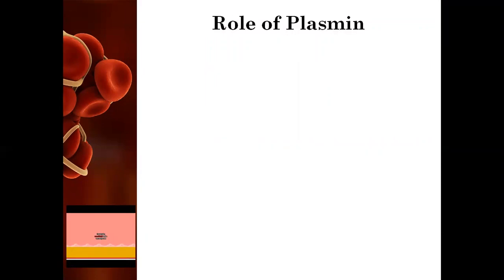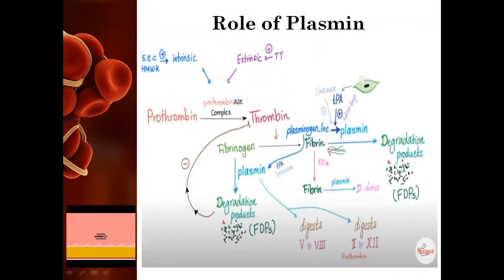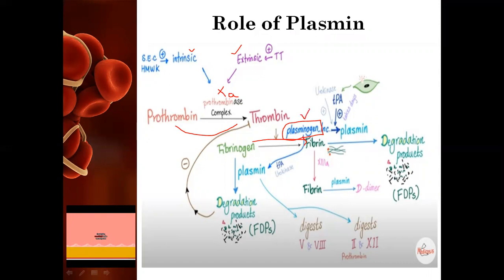Plasmin plays a very important role in the body. First of all, one should know that it is present in an inactivated form — that is plasminogen. In the clot process, as we have seen in a previous video lecture on anticoagulants and coagulants, the intrinsic and extrinsic activity takes place. Factor 10a, which is common to both pathways, along with prothrombinase converts prothrombin to thrombin, and this thrombin in turn activates fibrinogen to fibrin. At the time of fibrin formation, when fibrin comes to the platelet aggregates to form the clot, plasminogen also accompanies the fibrin but remains in inactivated form.